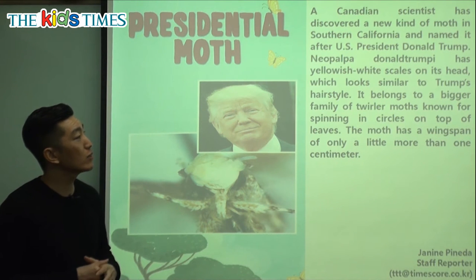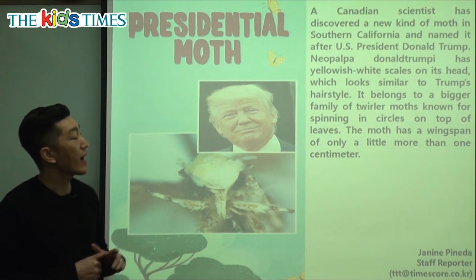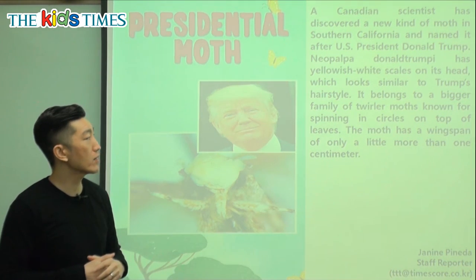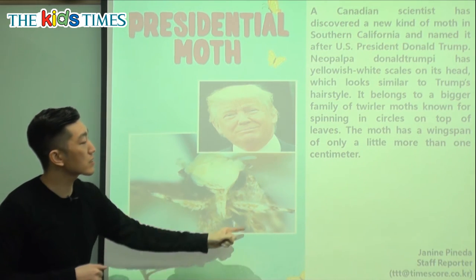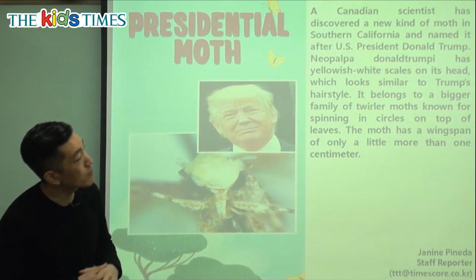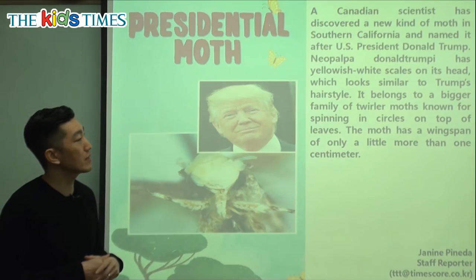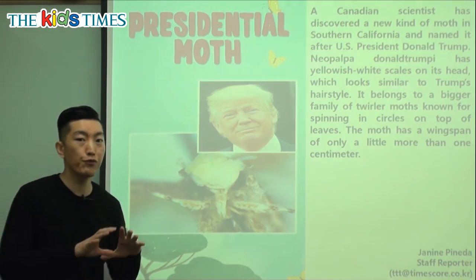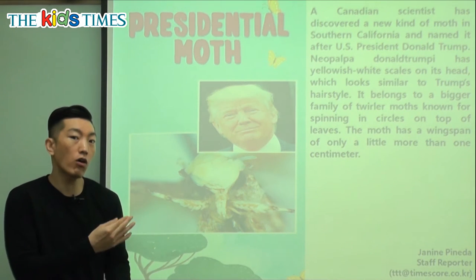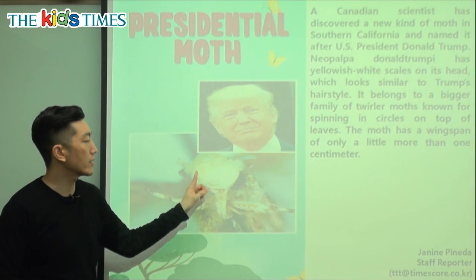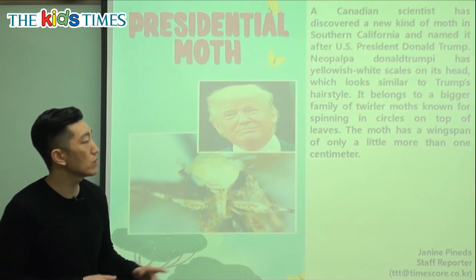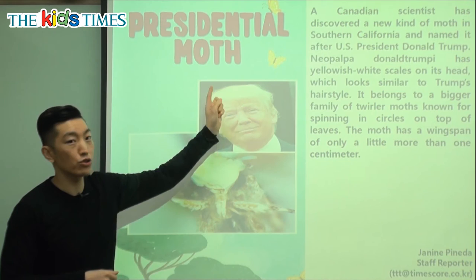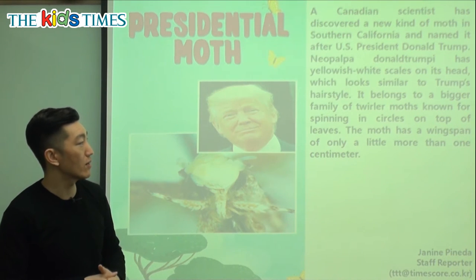Neopalpa Donaldtrumpi has yellowish white scales on its head, which looks similar to Trump's hairstyle. This moth is named Neopalpa Donaldtrumpi because it has scales — you know how a fish has that hard cover on its body? That's a scale. It has yellowish white scales on its head, and it looks like Donald Trump's yellowish white hair — his hairstyle.